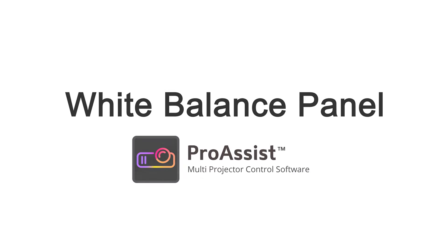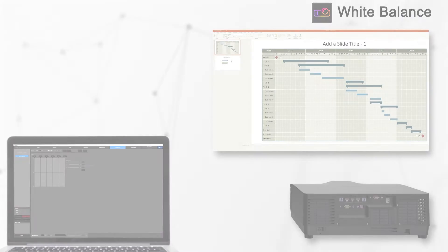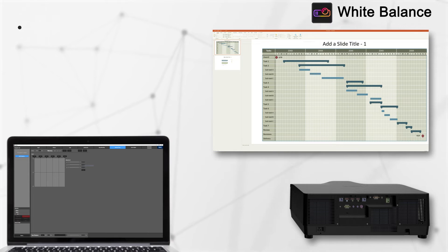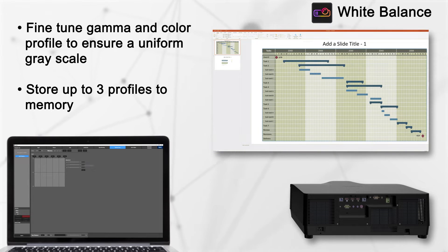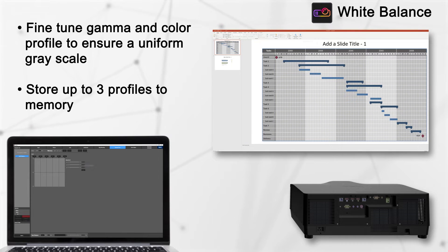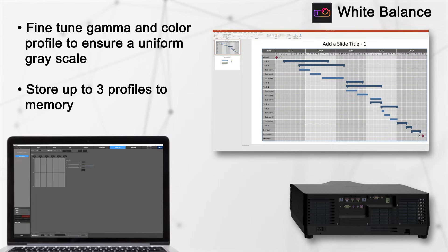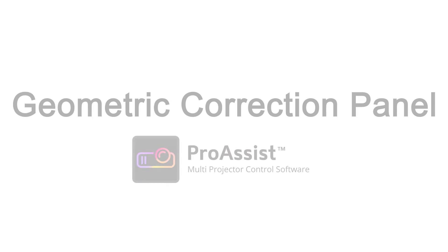The white balance panel allows you to make fine-tuned adjustments to the gamma and color profile to ensure a uniform gray scale. It also stores up to three different profiles to memory.